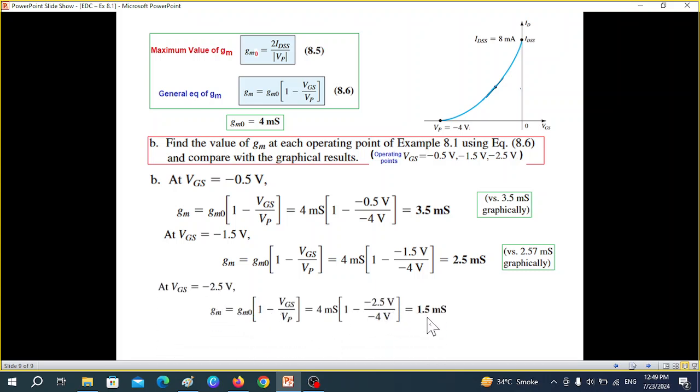And the third point minus 2.5, we find it to be 1.5 milli Siemens. And in the graph also, we found 1.5 milli Siemens.